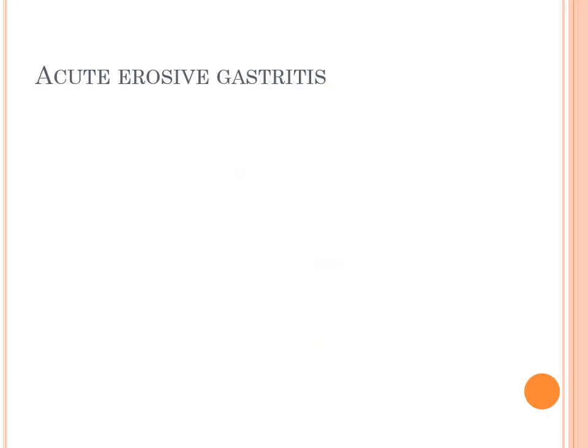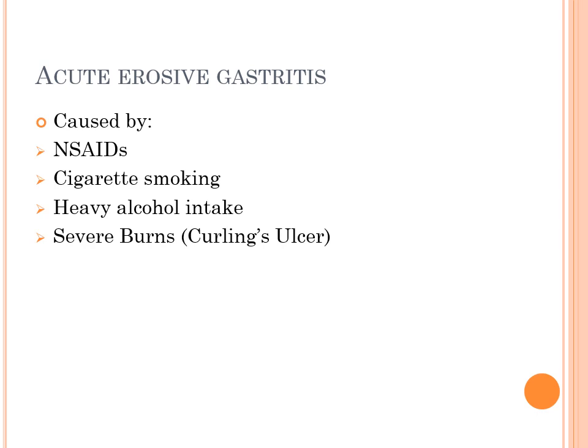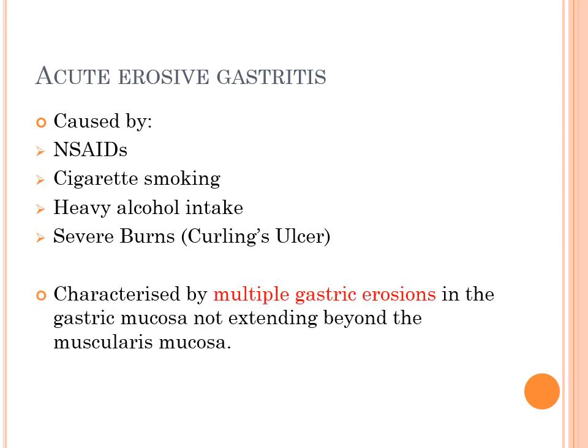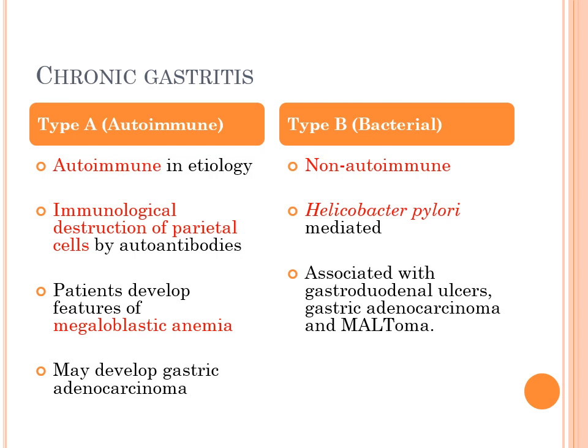Acute erosive gastritis is caused mainly by intake of NSAIDs, cigarette smoking, heavy alcohol intake, and in cases of severe burns, which is called Curling's ulcer. It is characterized by multiple erosions in the gastric mucosa not extending beyond the muscularis mucosa. When lesions extend beyond the muscularis mucosa they are called ulcers, but when restricted to the muscularis mucosa they are called erosions — that is the difference between an erosion and an ulcer.